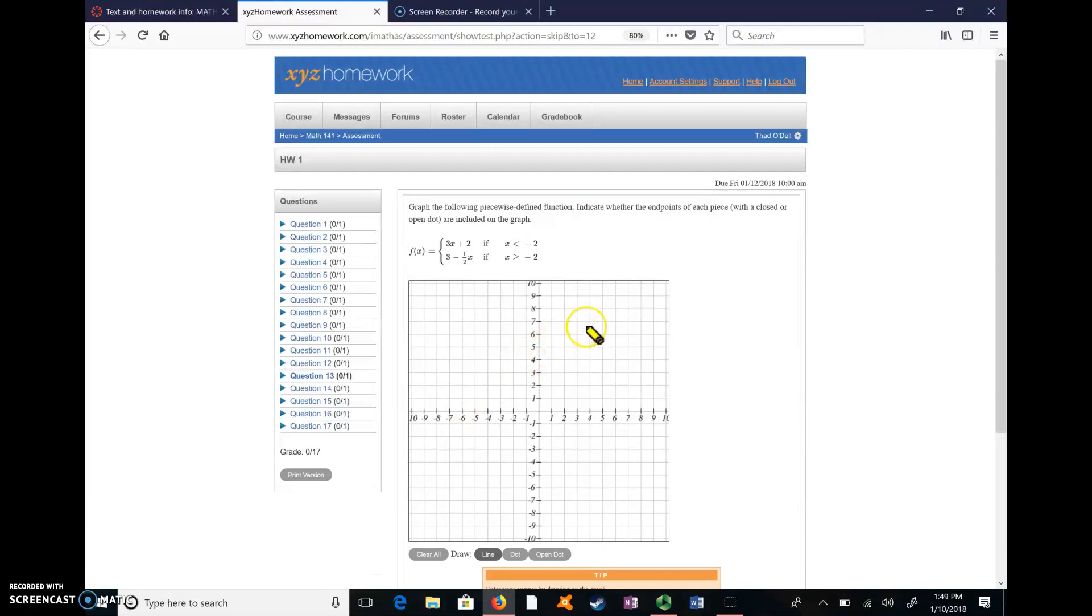This is question 13 on the homework, and it's probably the most graphing intensive. So the idea is that you want to graph this piecewise function. The first part of the function takes place below negative 2 or to the left of negative 2.